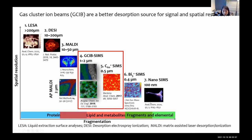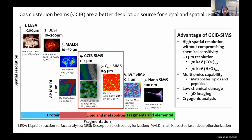But with the high-energy GCIB I have been developing, the mass range is extended to around 10,000, covering peptides, lipids, metabolites, and some multiply-charged protein ions. The low chemical damage of these beams makes 3D imaging with one beam feasible. The cryogenic workflow as a routine analysis for biosamples is better, especially to preserve transient and dynamic small molecules like metabolites. All these make GCIB better positioned for single-cell omics.